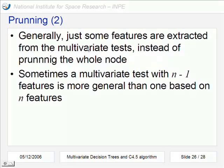Generally, we have to extract just some attributes or features of the tests instead of pruning the whole node. This is in the multivariate approach. And in theory, we can read that sometimes a multivariate test with n-1 features can be more general than one based on the whole set of features.